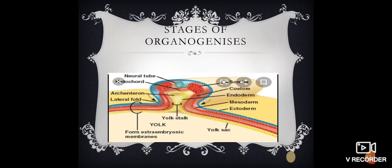Archenteron is formed. What is notochord? Notochord is rod-like structure that gives rigidity to body. What is archenteron? Archenteron is rudimentary structure which is formed during gastrulation.